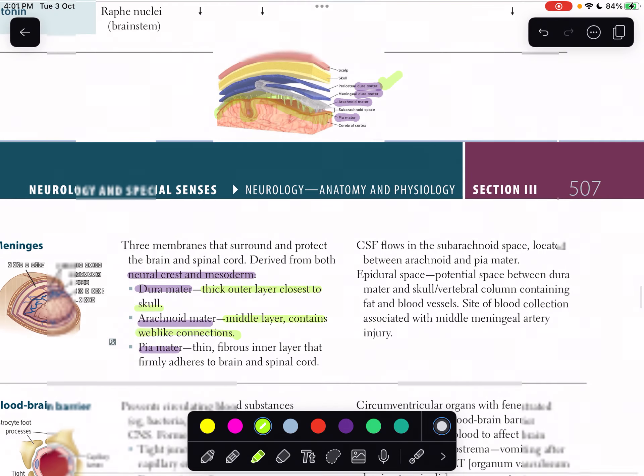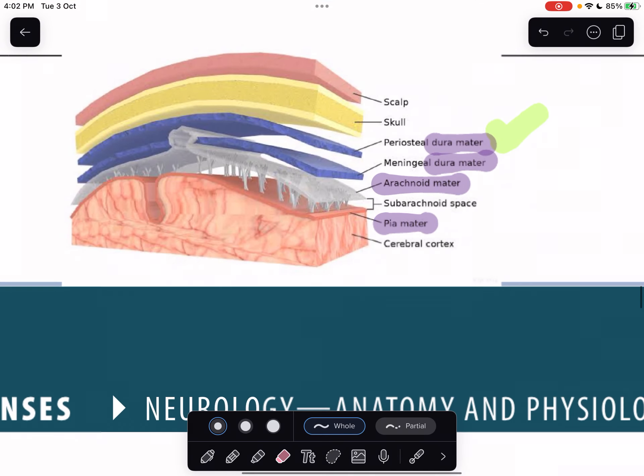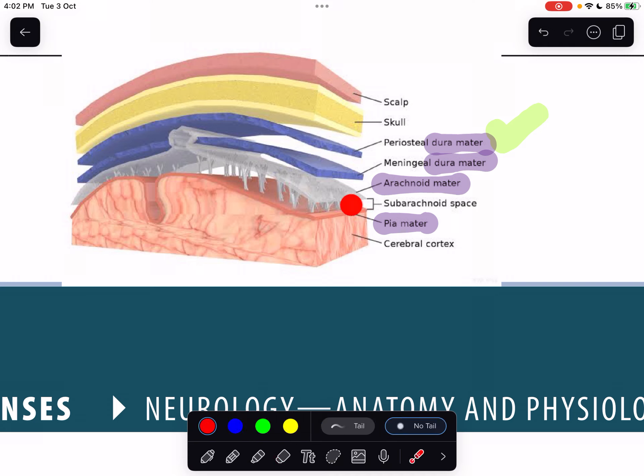CSF flows in the subarachnoid space located between arachnoid and pia matter. You should know that between the arachnoid matter and pia matter is the subarachnoid space, where cerebrospinal fluid is being formed and drained.